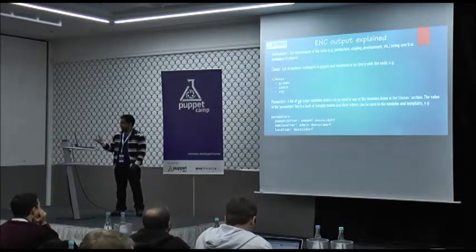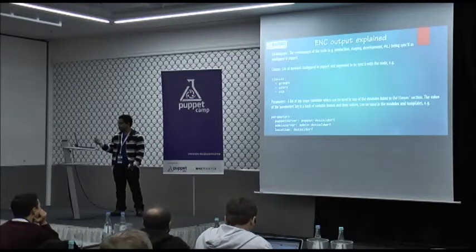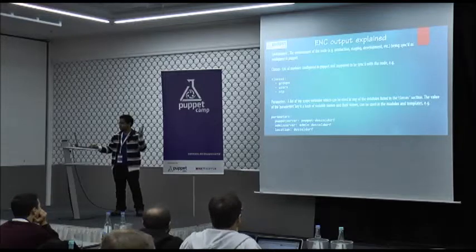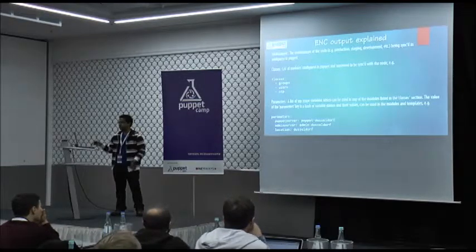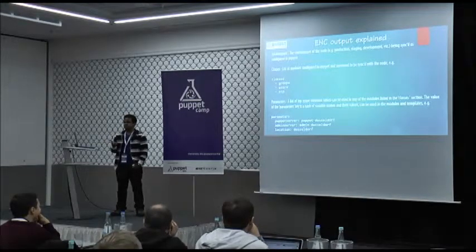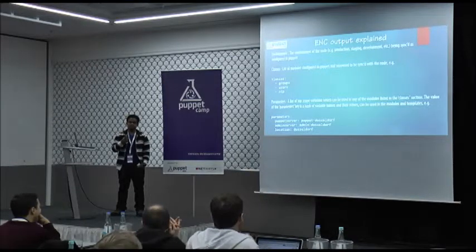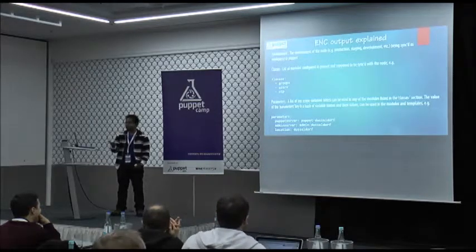Here is a more detailed understanding of what the ENC keys are. The environment covers production, staging, development; classes are the list of modules. All of them should be in YAML format, but with Ruby, Python, Perl, and other dynamic languages, there are really good libraries present to generate YAML outputs for you. And the parameters - here you see three: puppet server, admin server, and location - and you can put in as many others as you want.